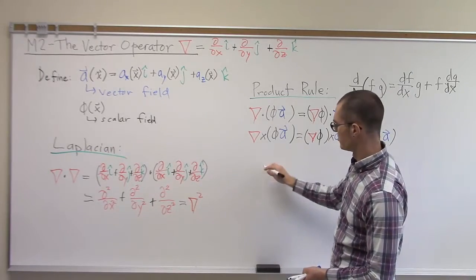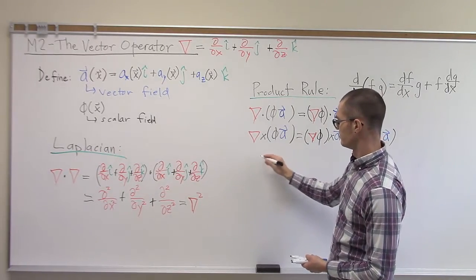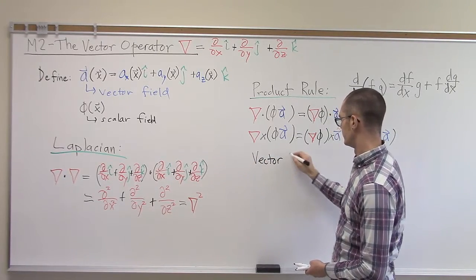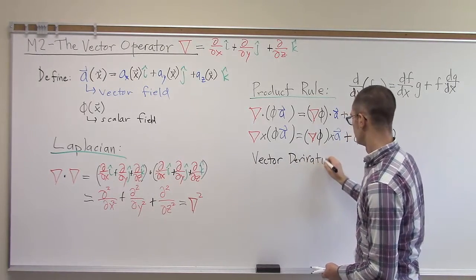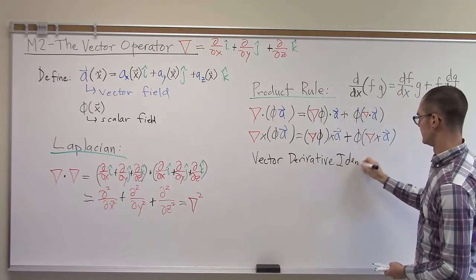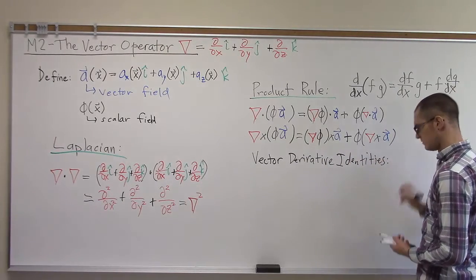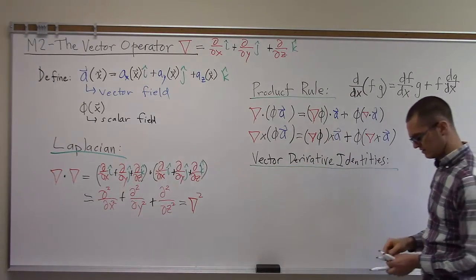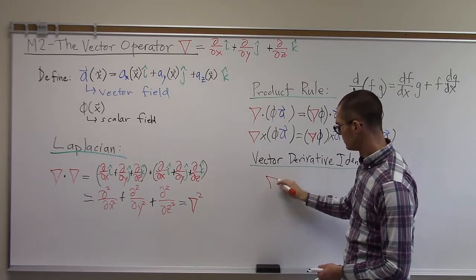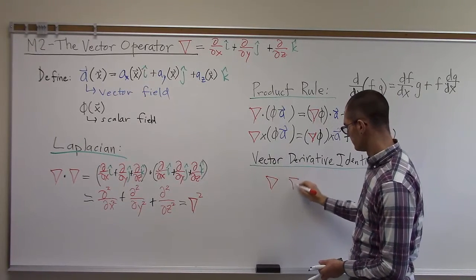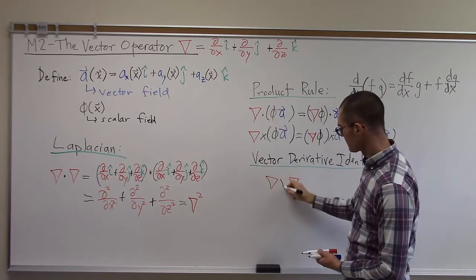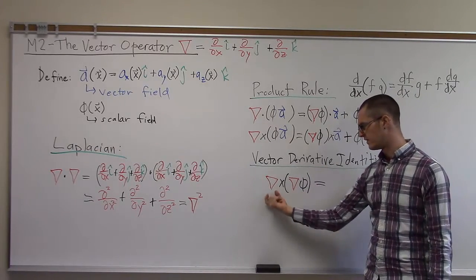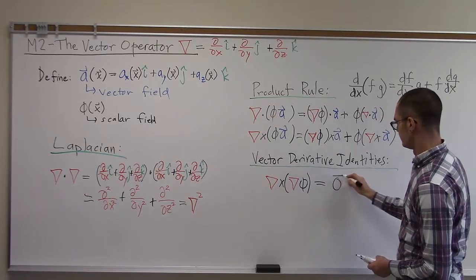The last thing we can look at are some important identities related to triple product identities, vector derivative identities. We have a vector field gradient, and the curl of that is always zero.